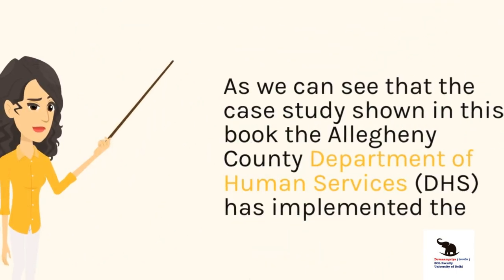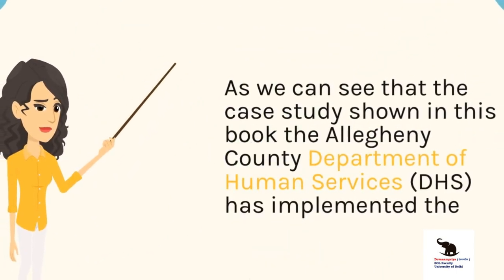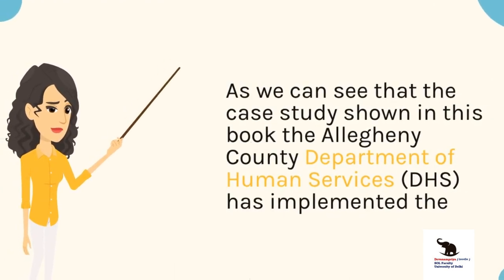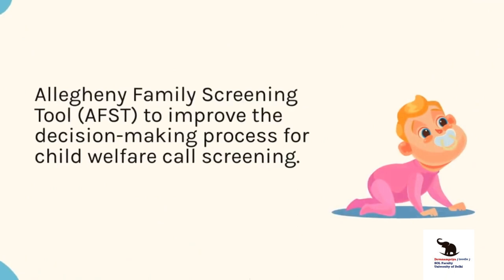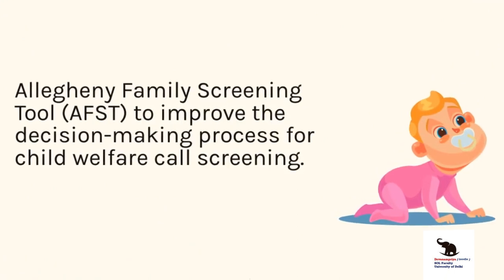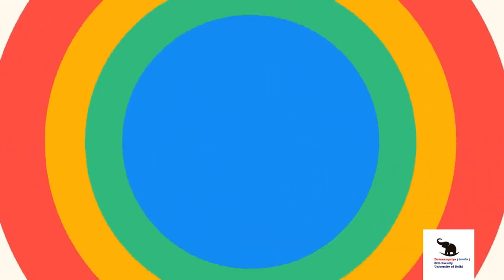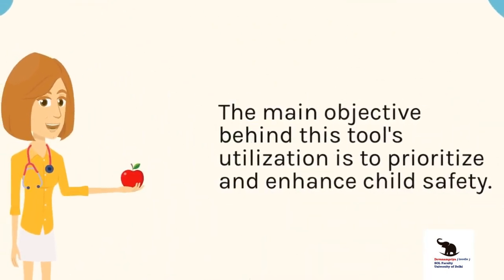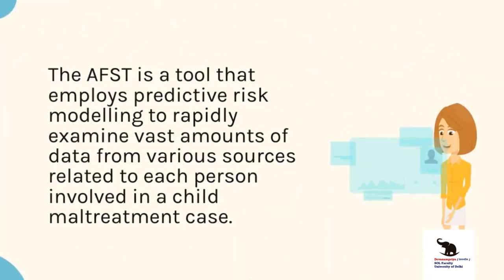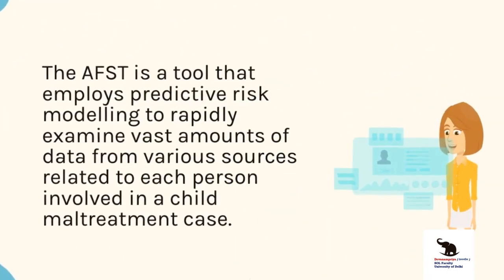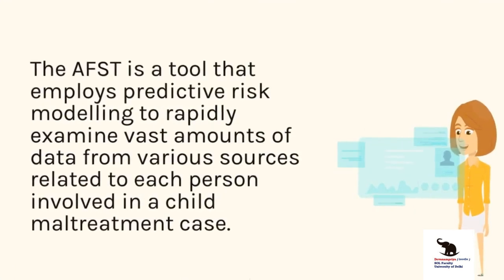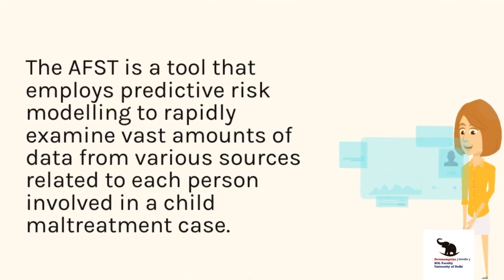As shown in this book's case study, the Allegheny County Department of Human Services (DHS) has implemented the Allegheny Family Screening Tool (AFST) to improve the decision-making process for child welfare call screening. The main objective behind this tool's utilization is to prioritize and enhance child safety. The AFST employs predictive risk modeling to rapidly examine vast amounts of data from various sources related to each person involved in a child maltreatment case.